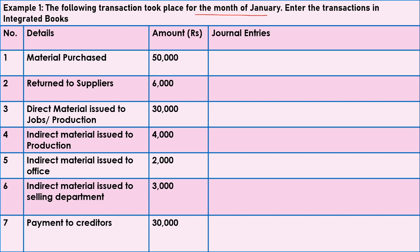Our first transaction is material purchased costing Rs.50,000. When material is purchased, it increases in the store — debit what comes in. So we debit Store Ledger Control Account and credit Cash Account because material is purchased in cash. Entry: Store Ledger Control Account Dr. to Cash Account — Rs.50,000.